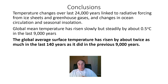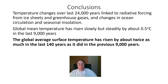What can we conclude from these results? Temperature changes over the last 24,000 years are linked to radiative forcing from ice sheets, greenhouse gases, changes in ocean circulation, and seasonal insolation. The global mean temperature rose slowly but steadily by about half a degree centigrade over the last 9,000 years, yet it rose about twice as much in the last 140 years. It's awe-inspiring to realize that by burning fossil fuels, we have raised the temperature more in just over 100 years than natural processes did in the previous 9,000 years.